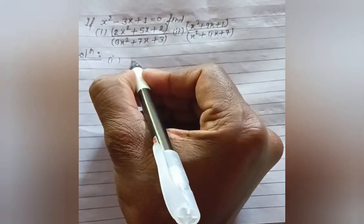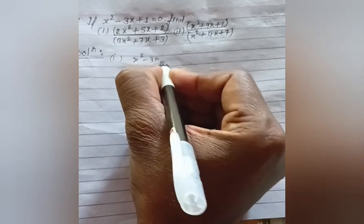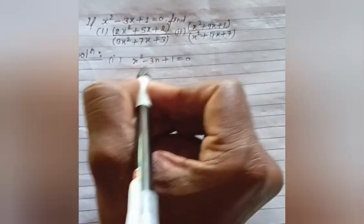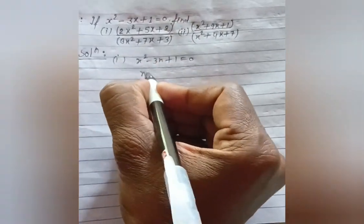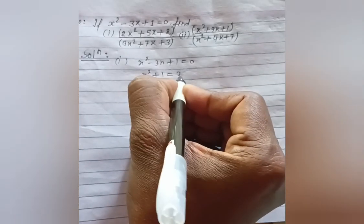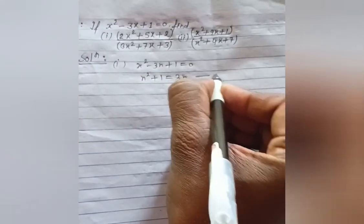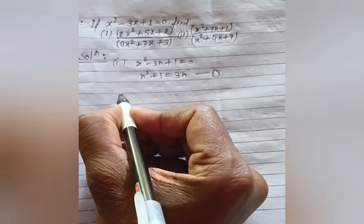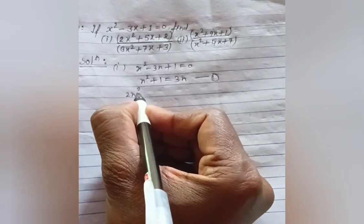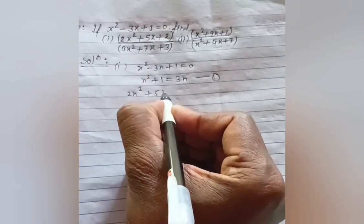From x² - 3x + 1 = 0, we rearrange to get x² + 1 = 3x. Now we need to evaluate the expression 2x² + 5x + 2